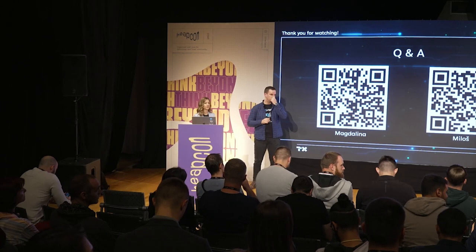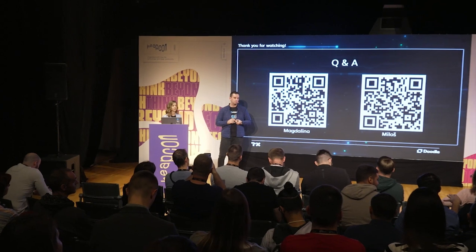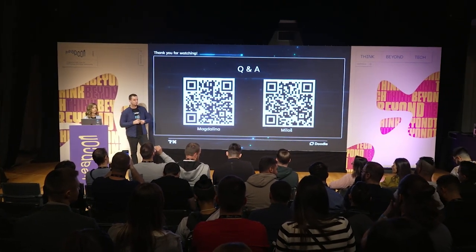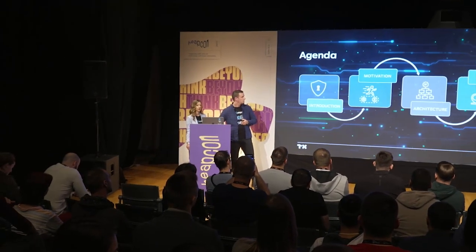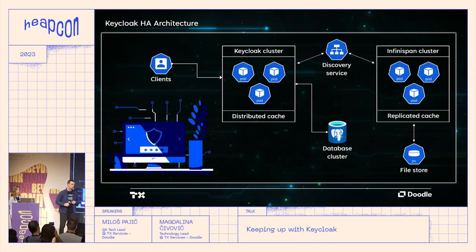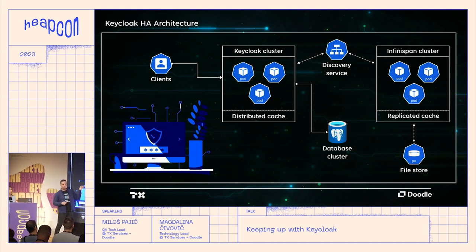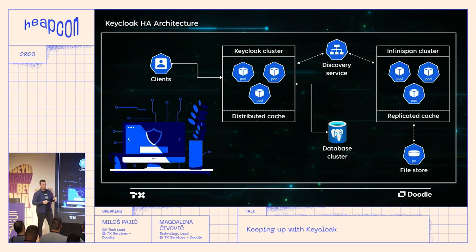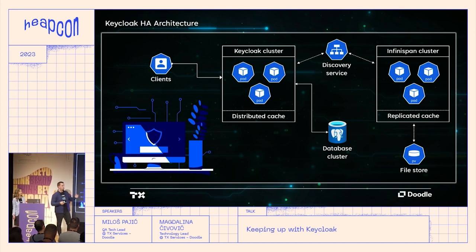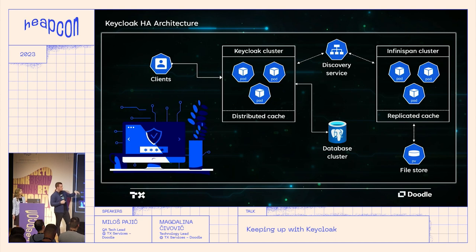Question: Could you elaborate on how many pods you have and what the system's request-per-second limit is? The bottleneck of this architecture would be the Infinispan cluster, since it uses replicated cache and can't scale as much due to the replication factor. The database can also be a bottleneck. Requests per second are not strictly limited since the distributed cache can scale horizontally to accommodate that. However, the number of sessions stored in the Infinispan cluster can be a bottleneck.